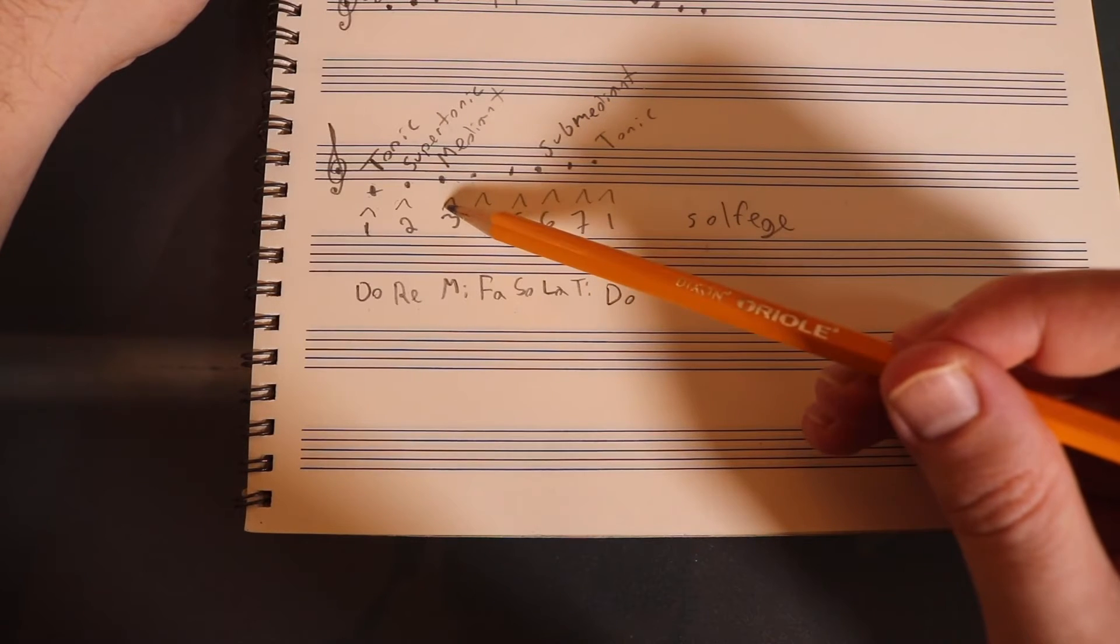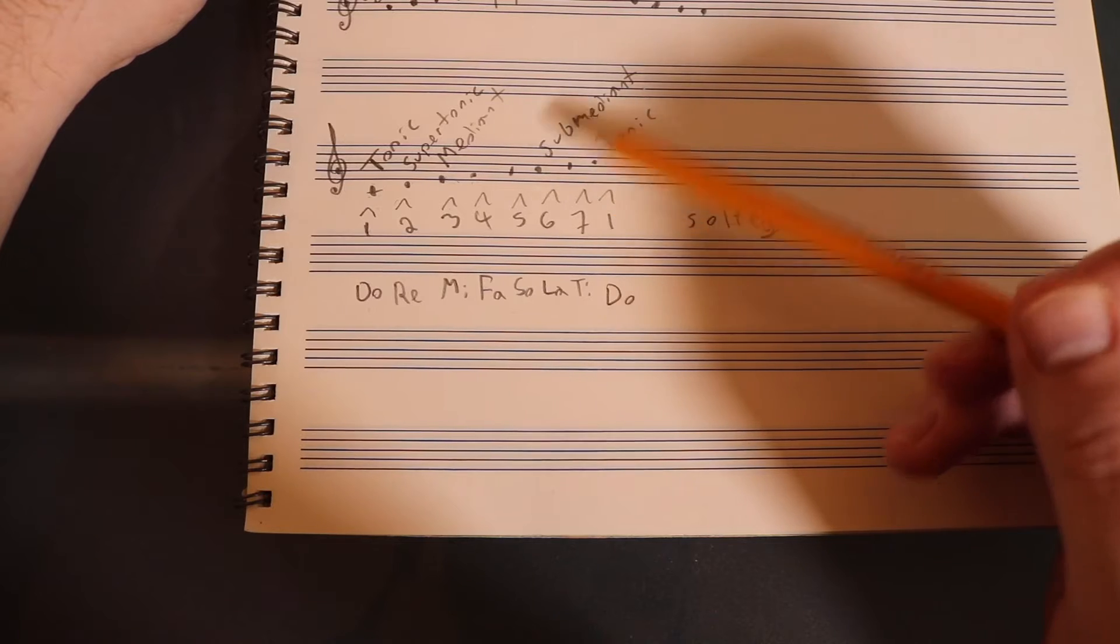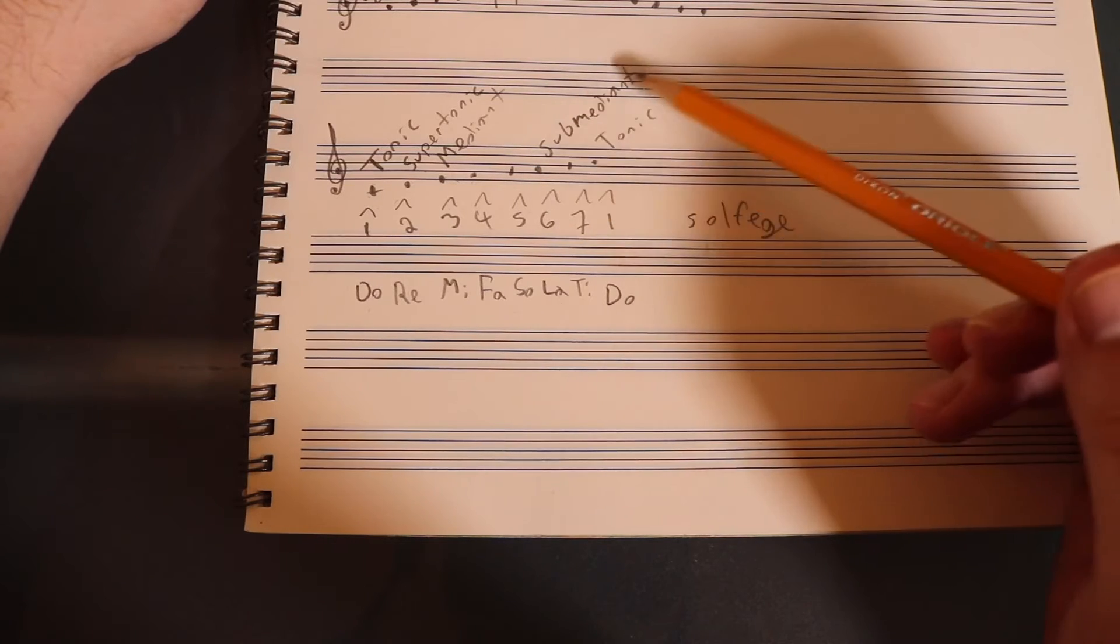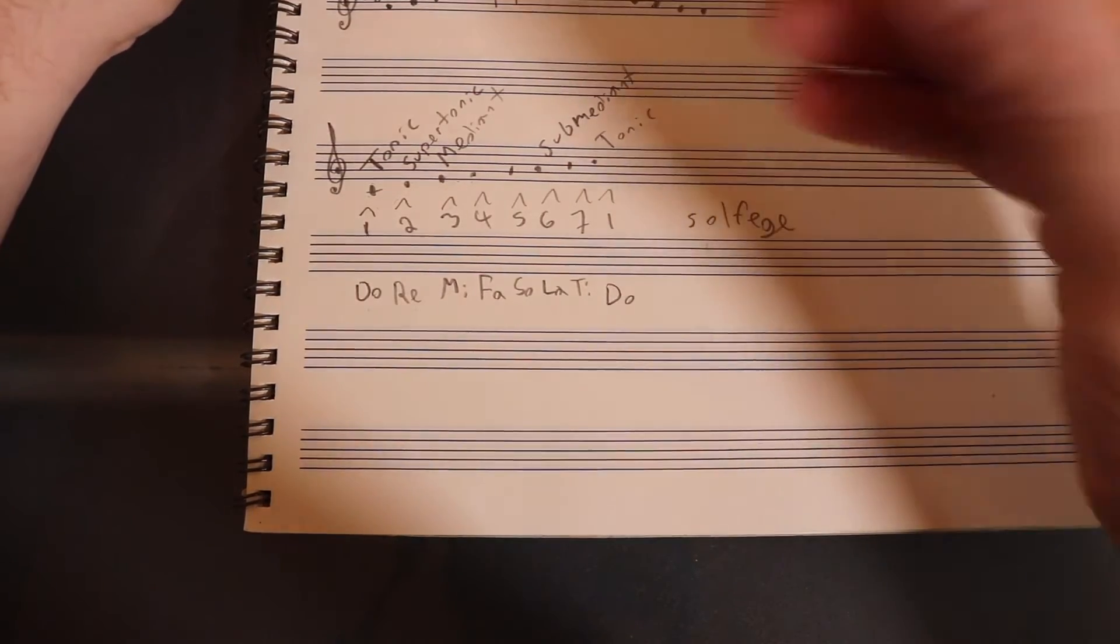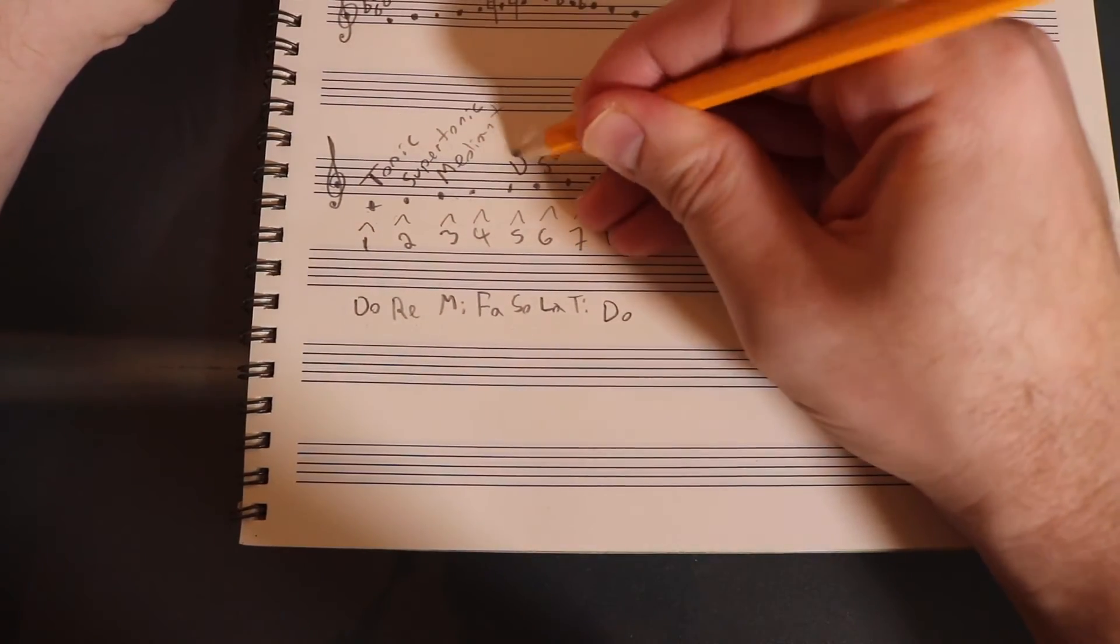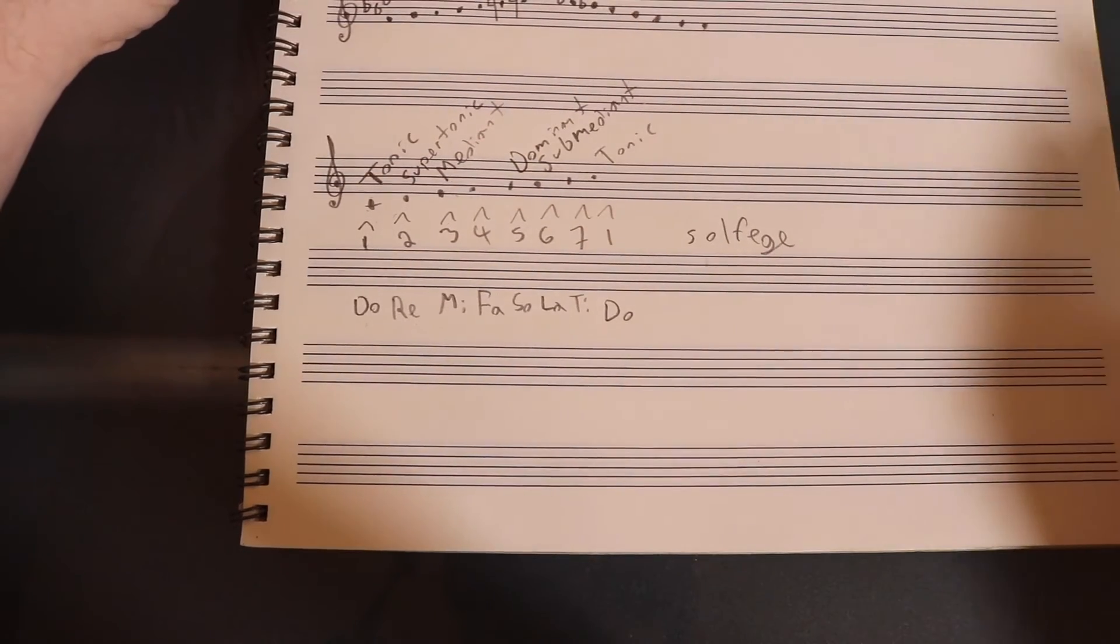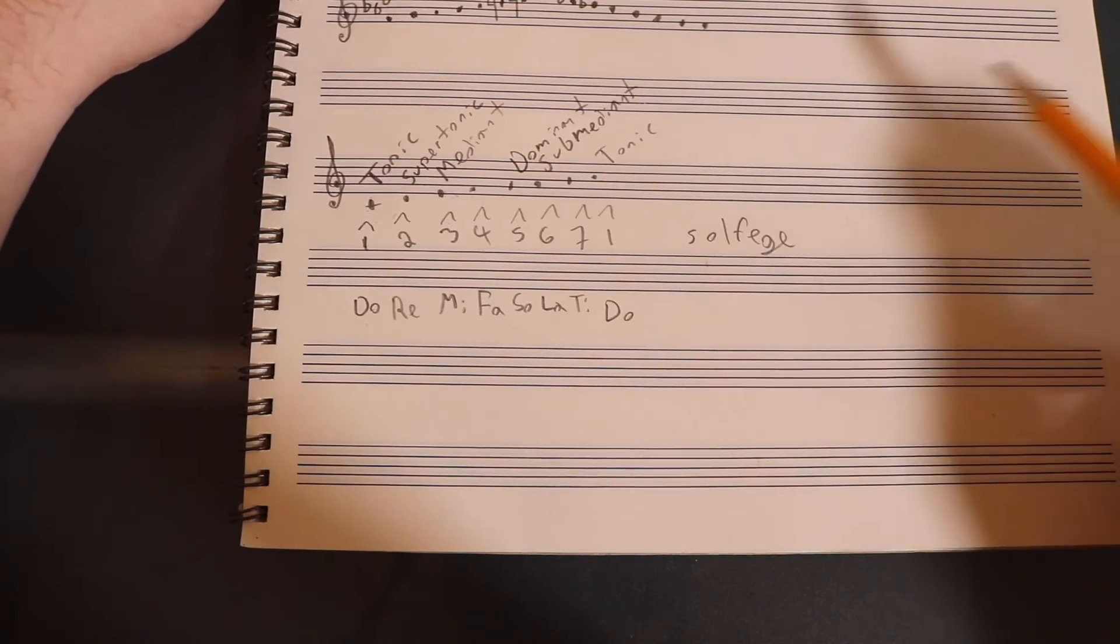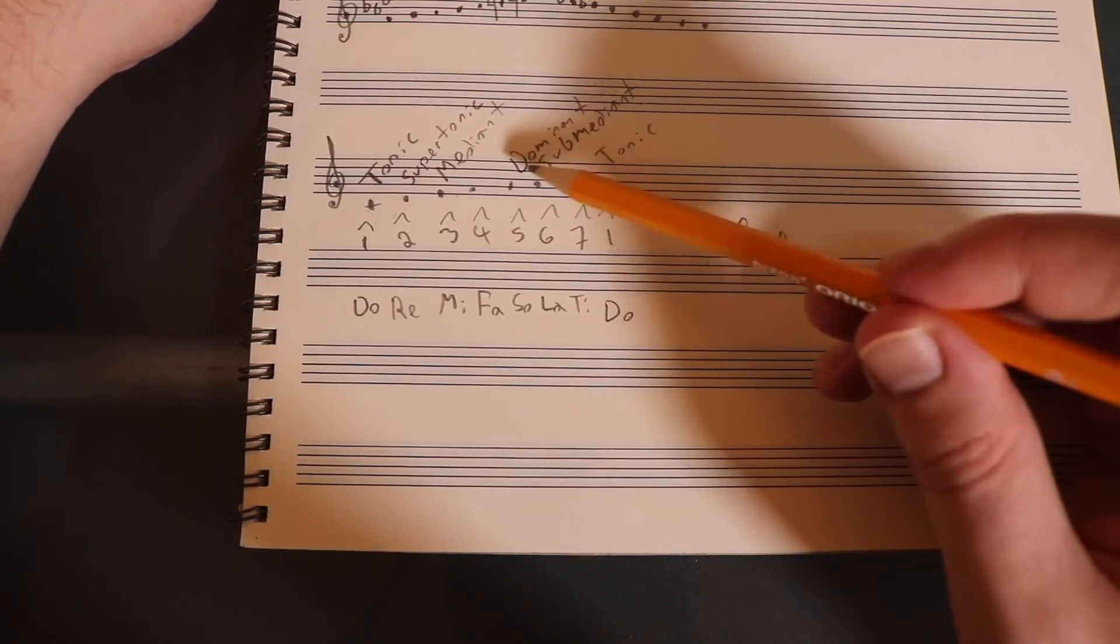So mediant, third scale degree. Again, here's the tonic. If I went down by the same amount, I'm at the submediant. Here's the one that people tend to mess up a lot. Dominant is the fifth scale degree. I should say they don't actually mess it up. They remember it, but they don't maybe quite keep in mind why we call it this way.